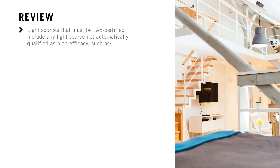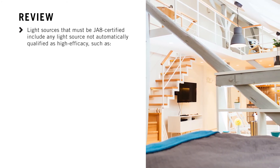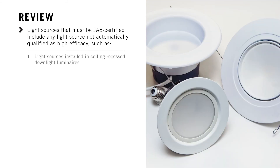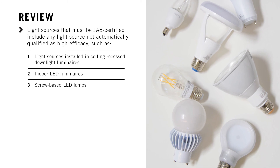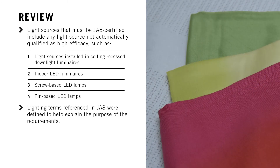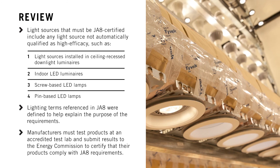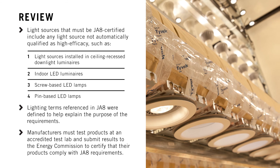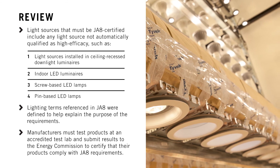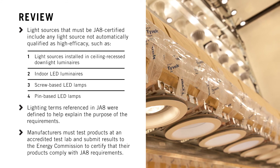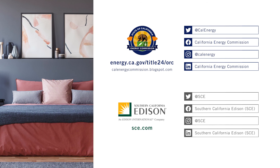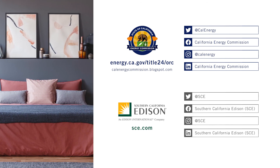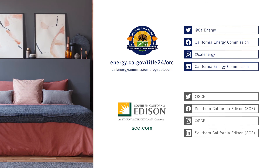Let's review what we've learned. Light sources that must be JA8 certified include any light source not automatically qualified as high efficacy, such as light sources installed in ceiling-recessed downlight luminaires, indoor LED luminaires, screw-based LED lamps, and pin-based LED lamps. Lighting terms referenced in JA8 were defined to help explain the purpose of the requirements. Manufacturers must test products at an accredited test lab and submit results to the Energy Commission to certify that their products comply with JA8 requirements. For more information, visit the Energy Commission website at energy.ca.gov/title24/ORC.